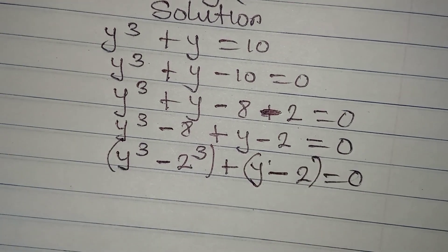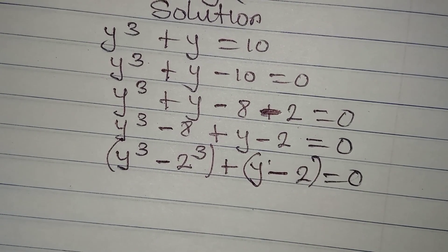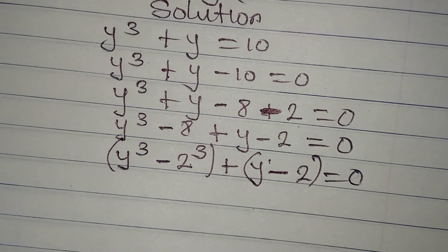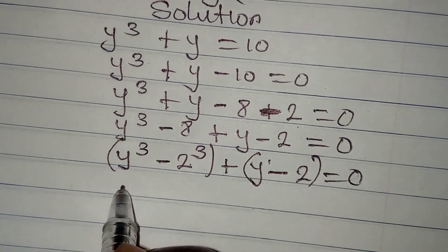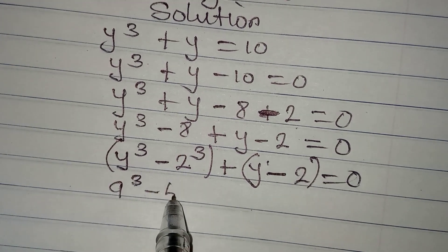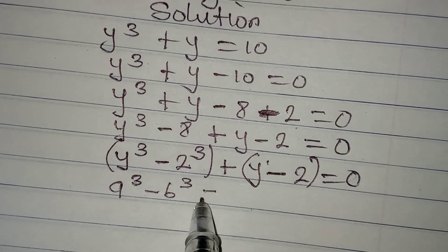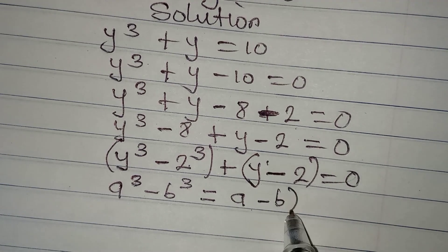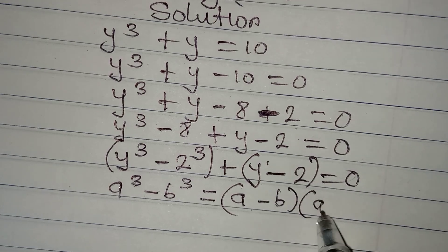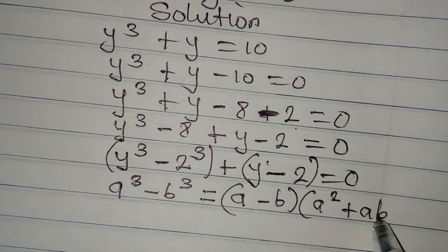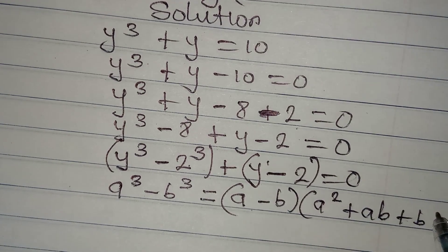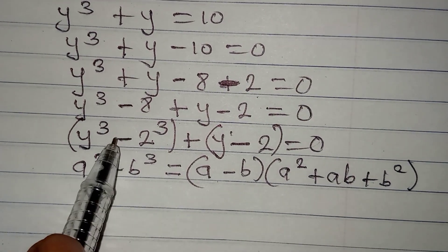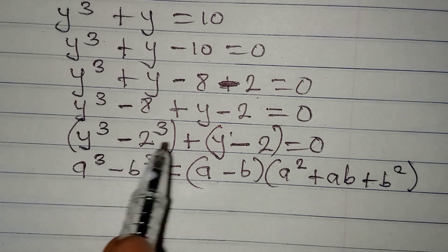We can group this into two pairs and apply the standard difference of cubes formula. If you have a cubed minus b cubed, this equals a minus b, multiplied by a squared plus ab plus b squared. We will apply this standard to the first bracket.